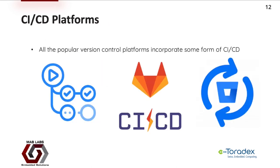All of the popular version control platforms have some form of CI/CD support. For example, GitHub — which is our focus today — has GitHub Actions. GitLab has GitLab CI/CD. And Bitbucket by Atlassian has Bitbucket Pipelines.